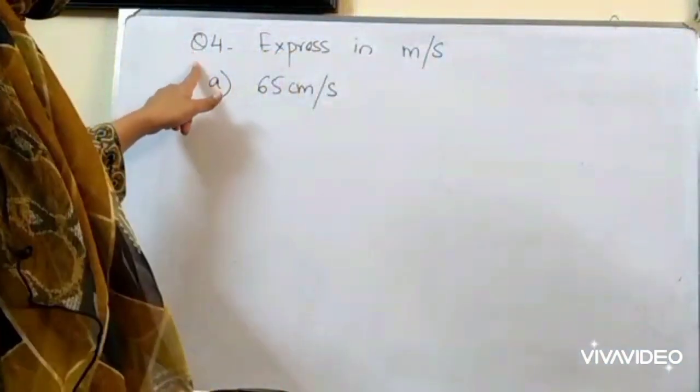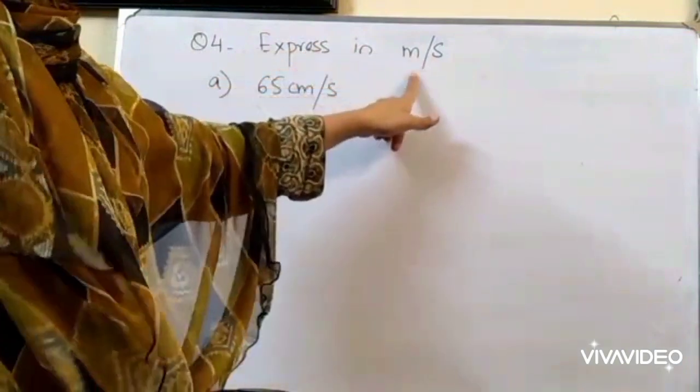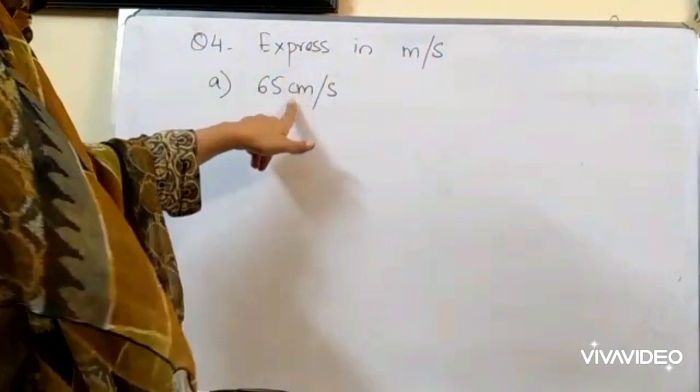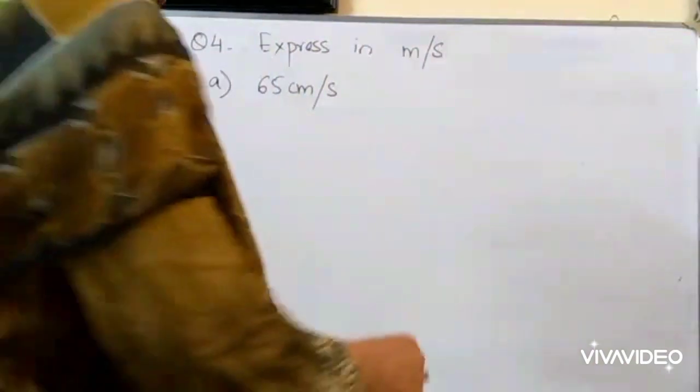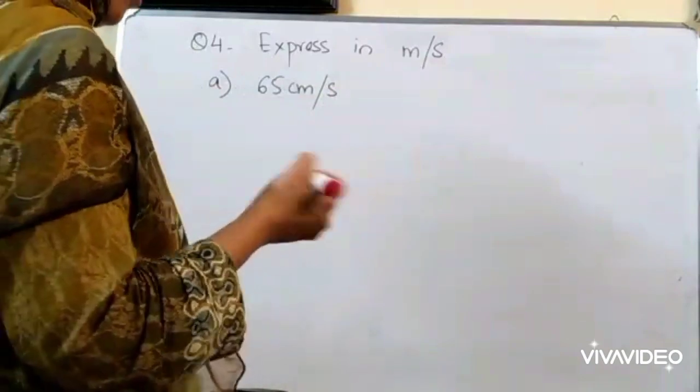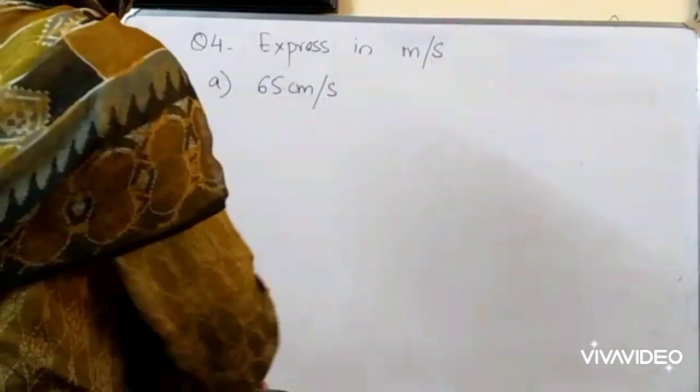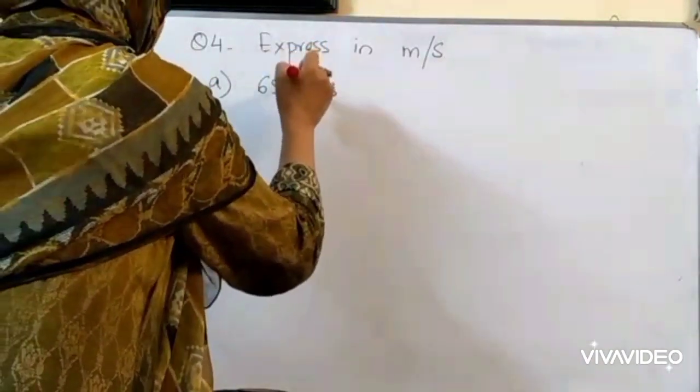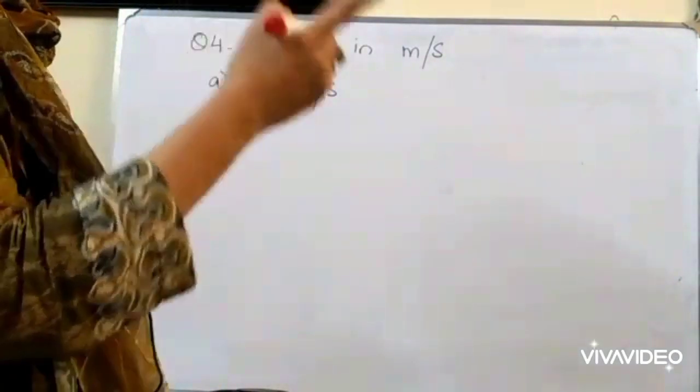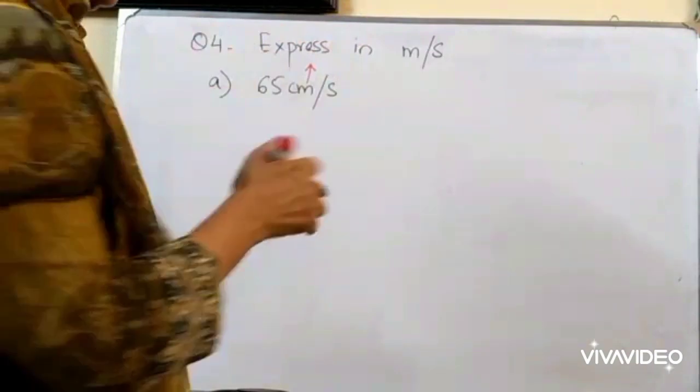Question number 4 is written here. Express in meter per second. And the first part is 65 centimeter per second. Now, for seconds we can see that we don't need to change the seconds. It is already in seconds. But we need to change centimeters into meters. So, we have to go one time upward. That is division.